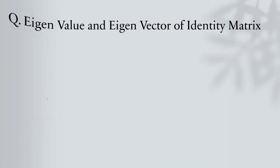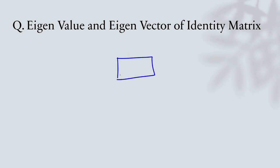Today's problem is to find out the eigenvalues and eigenvectors for the identity matrix. The identity matrix is my machine. I want to find out the eigenvalue and eigenvector.